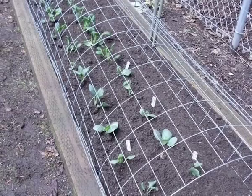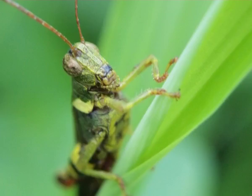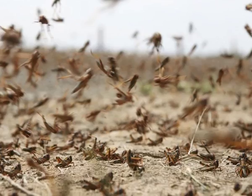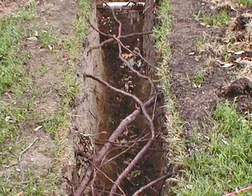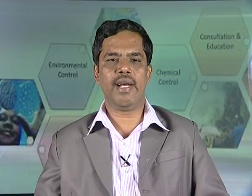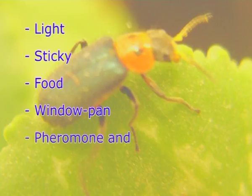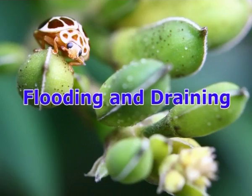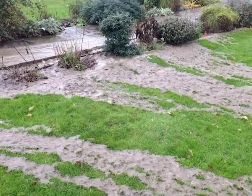Digging of trenches: some insects like nymphs of grasshoppers and locusts have the habit of moving in bands; this habit can be exploited by digging trenches and letting the marching insects fall into them to be buried or killed by insecticides. Trapping: any number of traps can be devised to exploit a dominating or fixed instinct of an insect; some of the devices used for trapping insects are light, sticky, food, window pan, pheromone and sound traps. Flooding and draining: insects that breed in soil can be killed by flooding the soil, and those that breed in water can be killed by draining the water out of the fields.